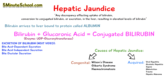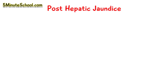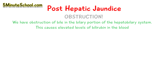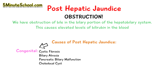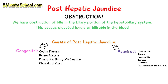The final category is post-hepatic jaundice, where the cause is due to the biliary portion of the hepatobiliary system, and the main cause is obstruction. Congenital causes include cystic fibrosis, biliary atresia, pancreatic biliary malfunction, and a choledochal cyst. Acquired causes can be cholecystitis, trauma, pancreatitis, tumours, gallstones, and intra-abdominal tuberculosis.